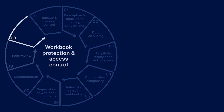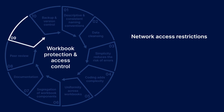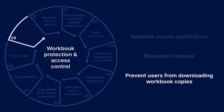Step 9 involves managing access levels and workbook protection to reduce the risk of accidental or malicious changes. This could involve, but is certainly not limited to, restricting access via network controls so that only users who have approval can see or open a file, tightly controlled passwords both for opening and editing the file, and preventing users from downloading copies of a workbook if the data it contains is particularly sensitive.